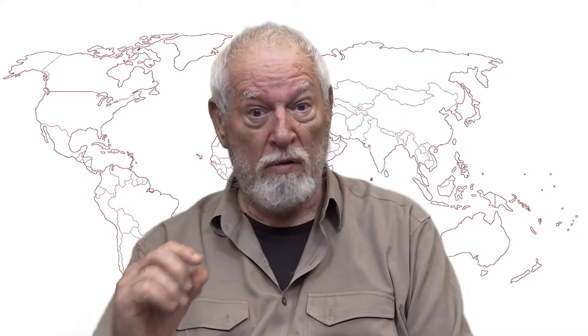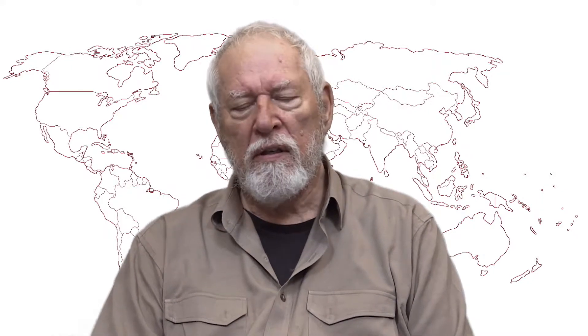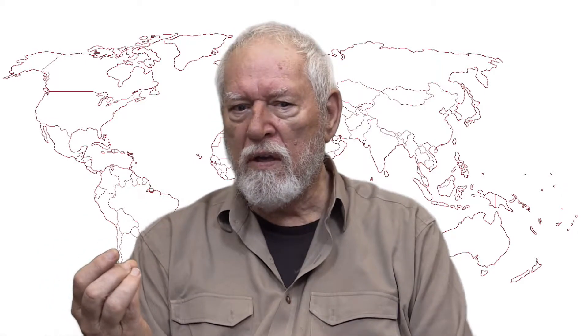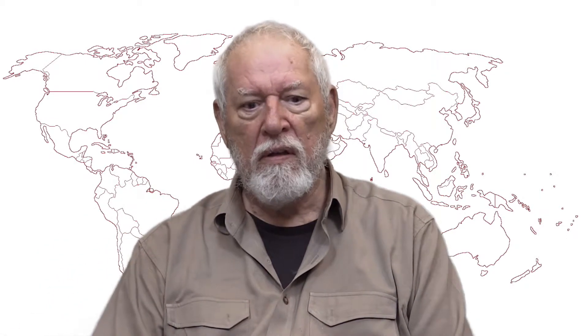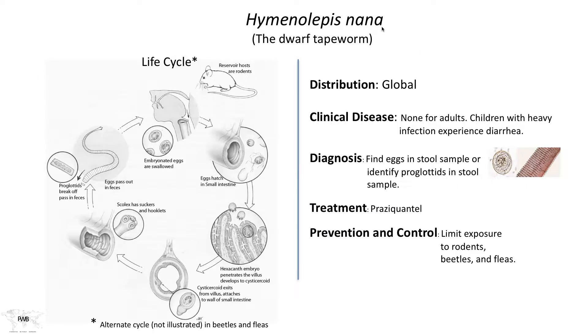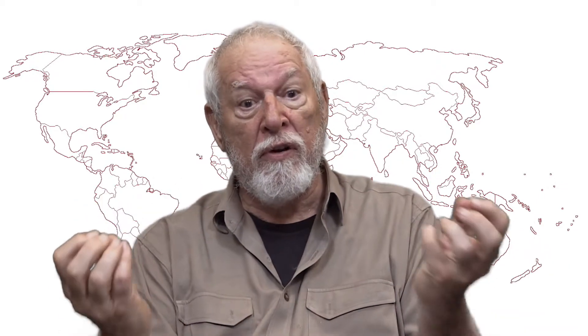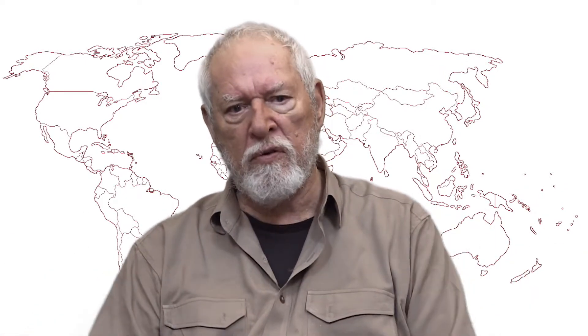The life cycle, just like all other tapeworms, involves an intermediate host — in this case, an insect. The infection begins by ingesting embryonated eggs, or we can ingest a beetle or a flea which contains the later stage of this parasite. There is also a stage that doesn't necessarily involve an insect; it can involve the mammalian host directly. So this parasite has two alternations to its life cycle, improving its chances for survival.